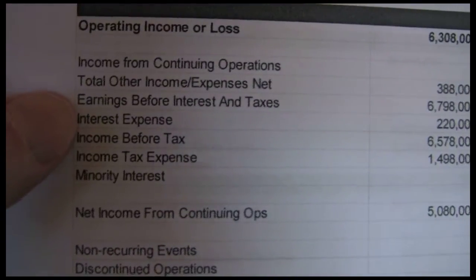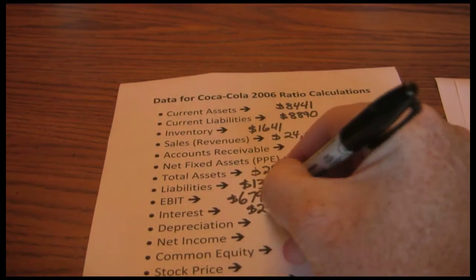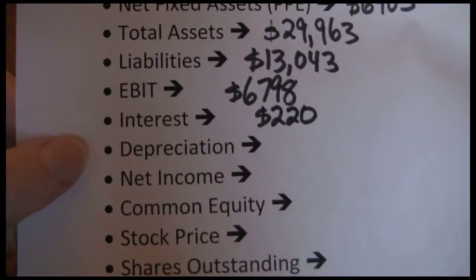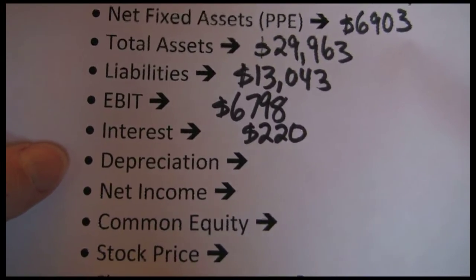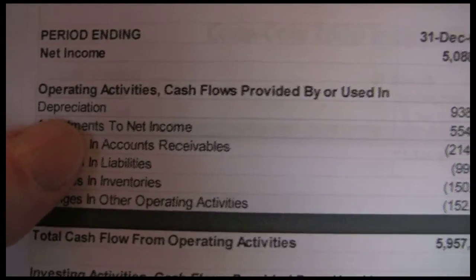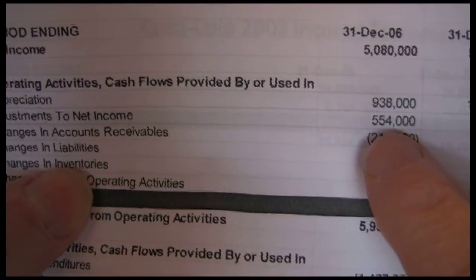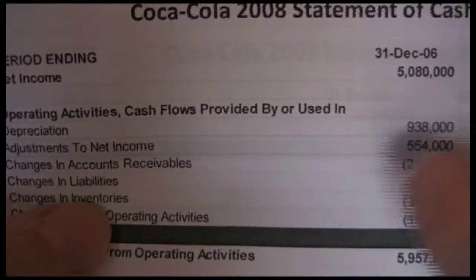Next up is interest, which is on the income statement right below the EBIT. There's our earnings before interest and taxes, and right below it we see the interest expense at $220,000. Next we want depreciation. All the pieces of information found so far have been either on the income statement or balance sheet. Depreciation is the one item we're going to get from the statement of cash flows. Looking at Coca-Cola's 2008 statement of cash flows, depreciation for that first year is $938,000.